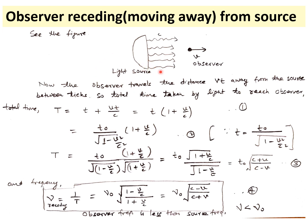Now we consider the longitudinal case where the source is here and the observer is moving away from the source. If the frequency of the light source is ν₀, we have to find ν for the observer moving with velocity v. In time t, the observer moves a distance v·t away from the source, so the total time for light to reach the observer is T = t + vt/c, since vt is the extra distance divided by the speed of light.